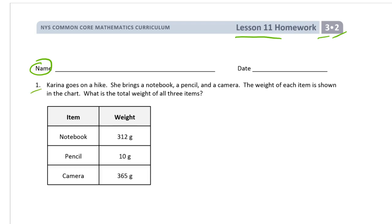Our first question: Karina goes on a hike. She brings a notebook, a pencil, and a camera. Here we have notebook, pencil, camera - that's right here on this chart. The weight of each item is shown in the chart. What's the total weight of all three items? So here's our picture. We've got three things. Let's make a little tape diagram here.